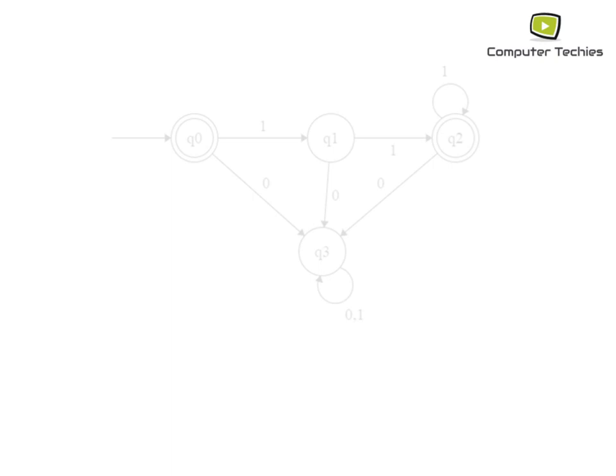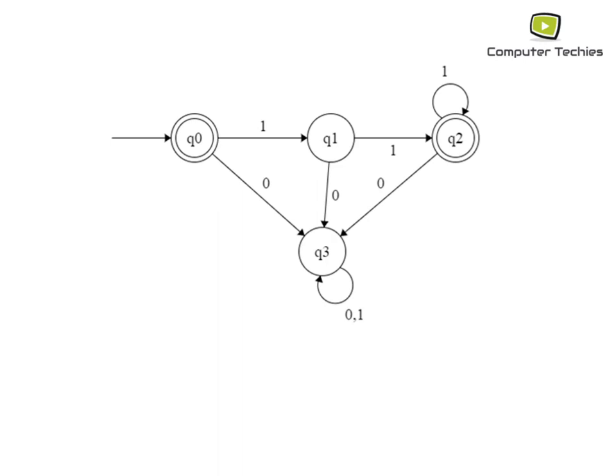Let's discuss diagrammatically the difference among these three. We have a finite automata with four states: Q0, Q1, Q2, and Q3. From Q0 on input 1 we reach Q1, on input 0 we reach Q3. For Q1, on input 1 we reach Q2, on input 0 we reach Q3. For Q2, on input 1 we remain in Q2, on input 0 we go to Q3. For Q3, whether we apply 0 or 1, we reside in the same state.